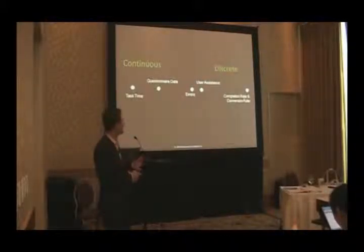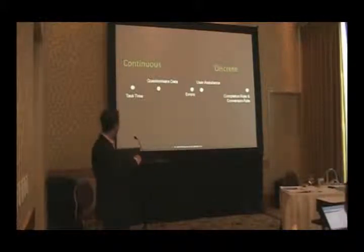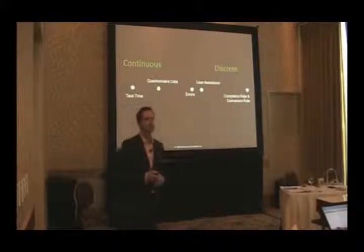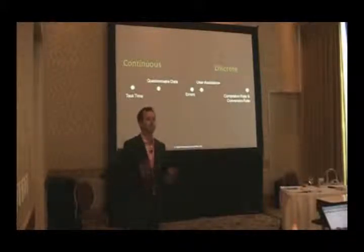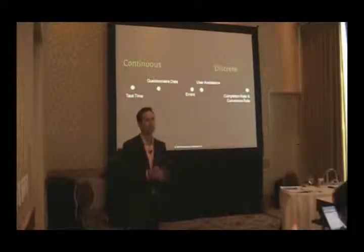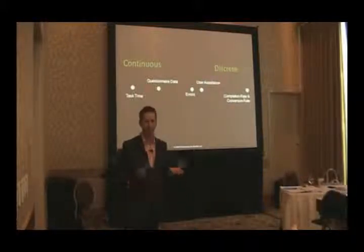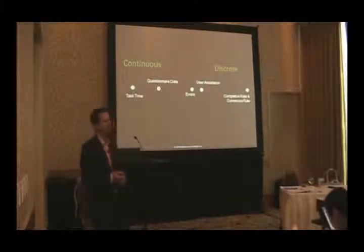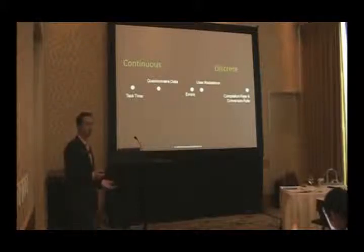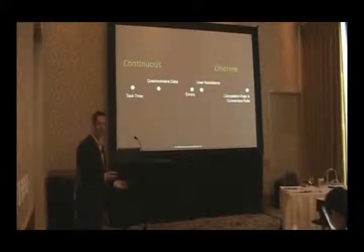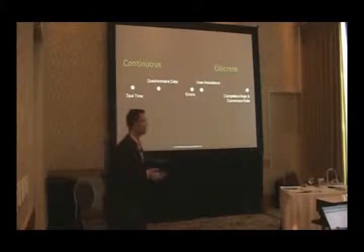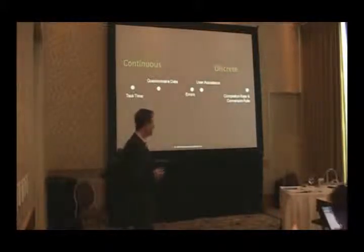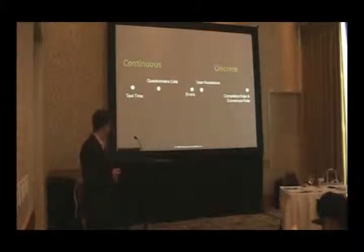At the other end is what's generally referred to as continuous data, and that's where you get task time. It's called continuous because you can subdivide it into theoretically smaller and smaller units — a minute, 30 seconds, 15 seconds, one second, half a second. You need a smaller sample size for continuous data, and there are different statistical procedures to use.